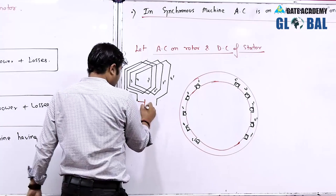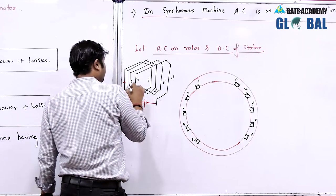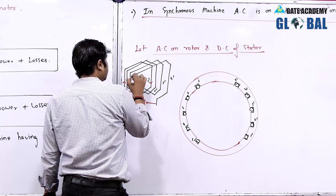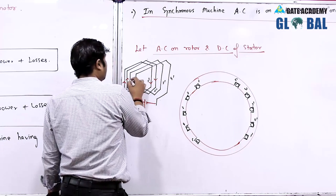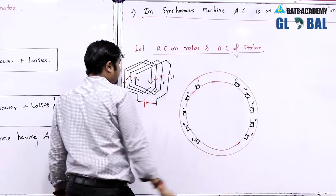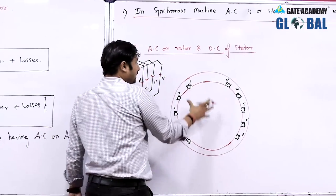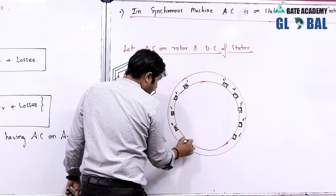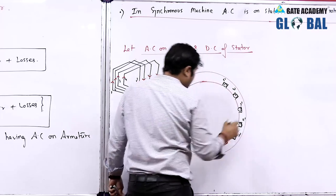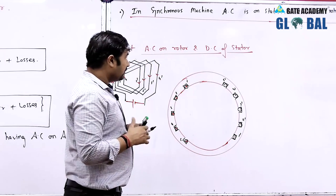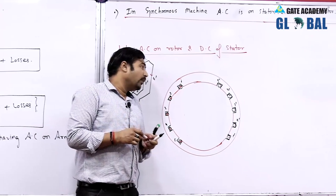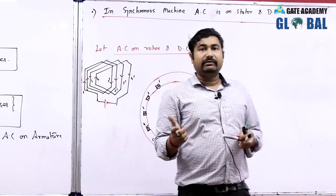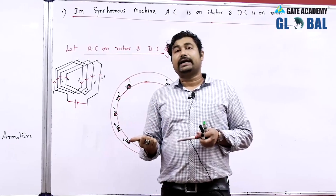If DC is being supplied, in conductor 1 current is coming into the conductor and in 1-dash, current is going away. Similarly in 2, current is going in; in 2-dash, current is going away. If we connect the stator with DC, the current flows in this fashion. From the right-hand grip rule, we can find the polarity of the pole formed by the current flowing into the conductor — whenever current flows through a wire, it creates a field.